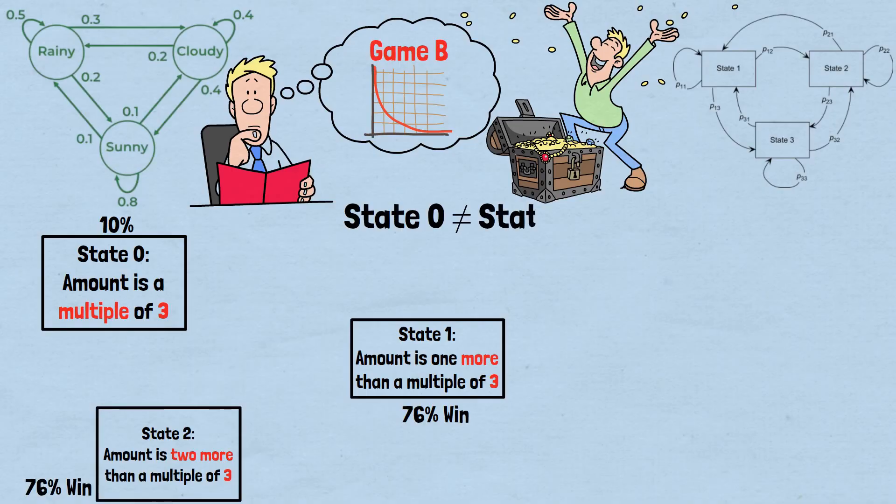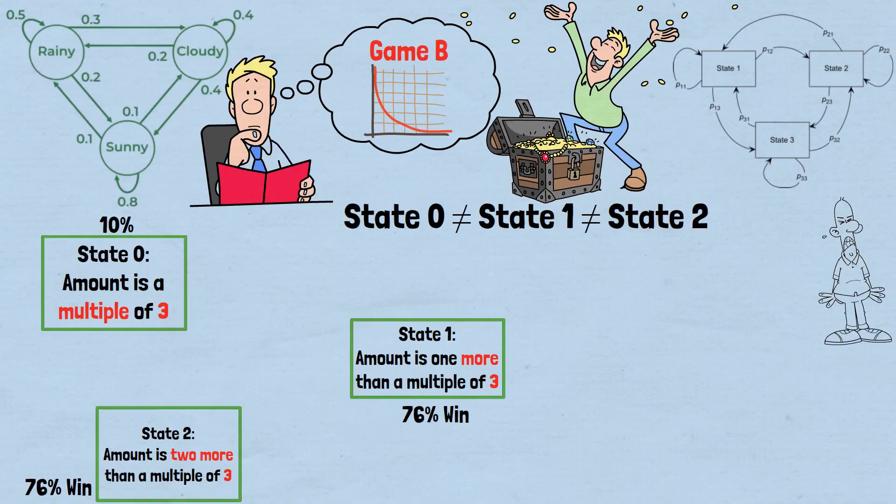When you win B1 (10% probability), you move from state zero to state one. When you lose B1 (90% probability), you move from state zero to state two. When you win B2 from state one (76% probability), you move to state two. When you lose B2 from state one (24% probability), you move to state zero.